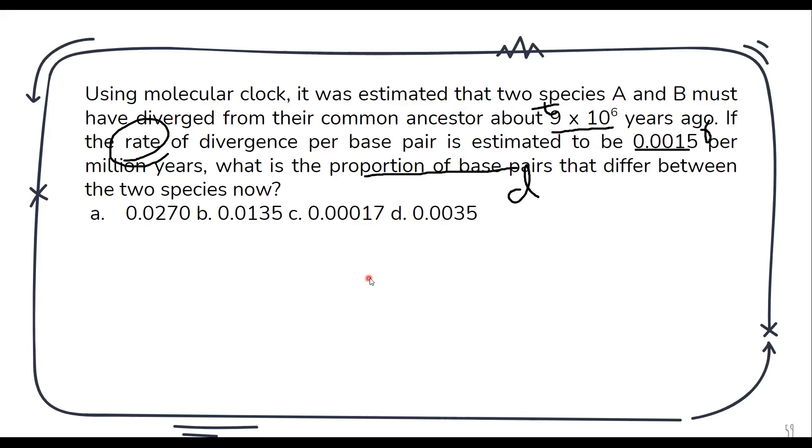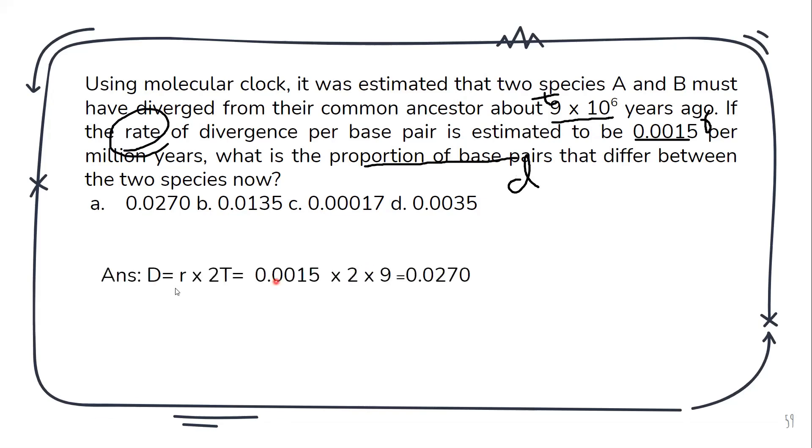So how to calculate this? Yes we have the formula d is equal to r into 2t. What we require was d. r is given 2 and t. Now why I have not considered this 10 raised to 6? Because the t has to be written in million years. So 10 raised to 6 is a million. So therefore I have only written 9. And if you calculate it the answer comes out to be 0.0270.